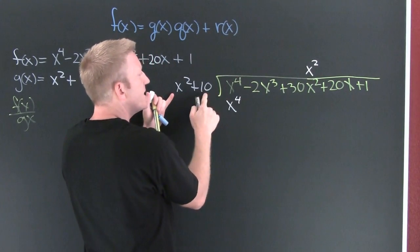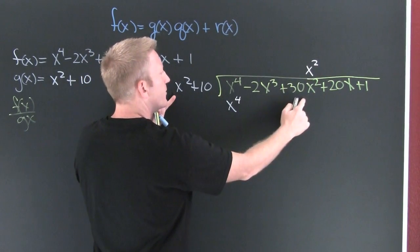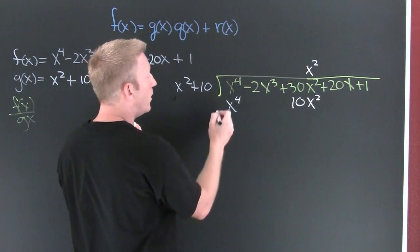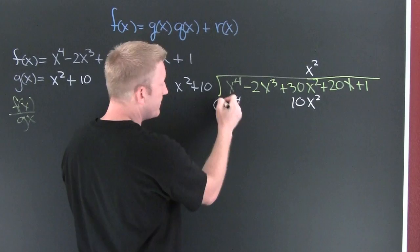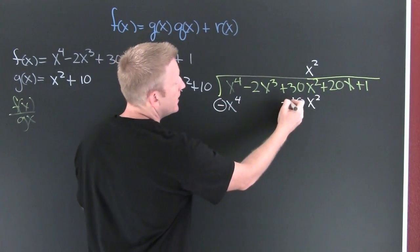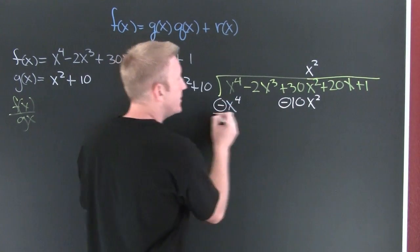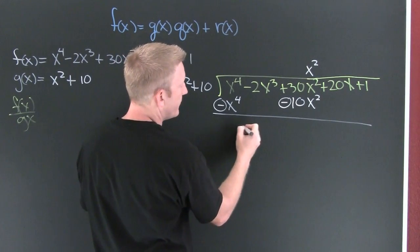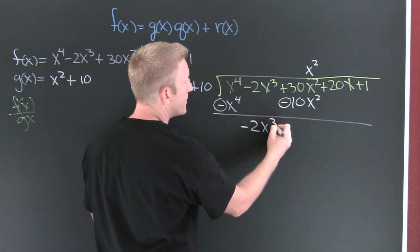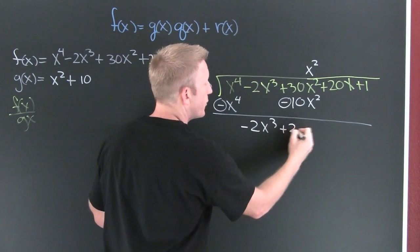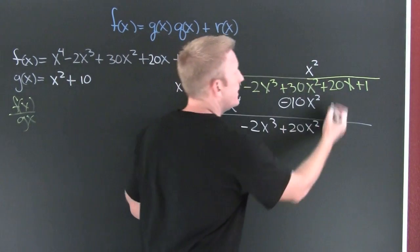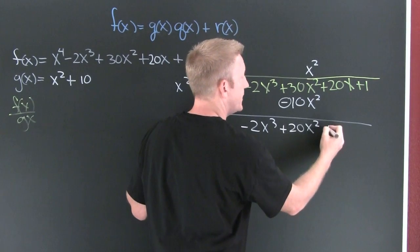This one times that one put it there: x to the fourth. This one times that one put it where that's in the x squared term, so I'm going to put it right there: 10x squared. Then I change the sign. I like to circle it, lets me know I've changed it. And I add down here. I'm going to get no x to the fourth, minus 2x to the third. Looks like that's plus 20x squared and I'm just going to bring everything else down: plus 20x plus 1.